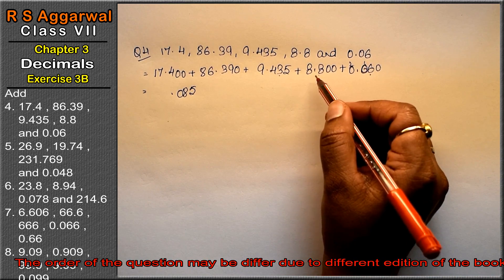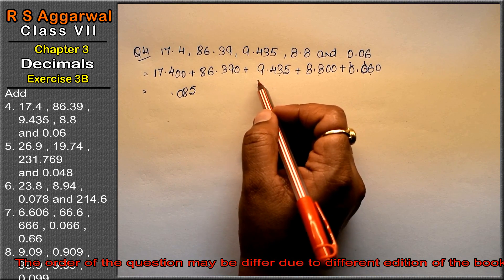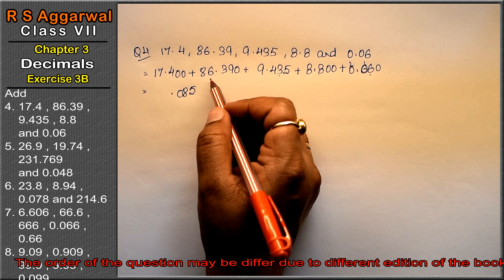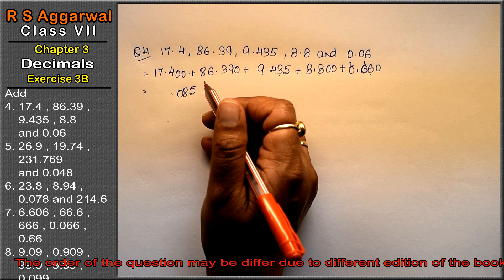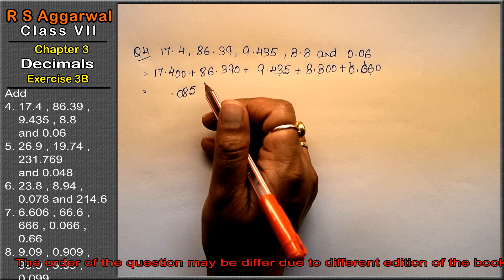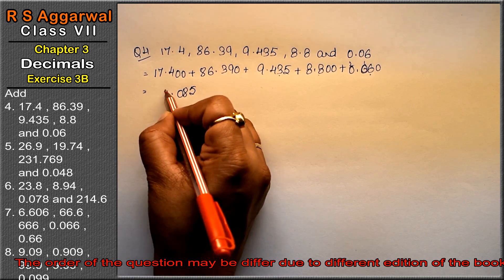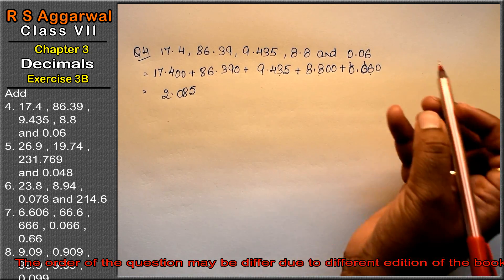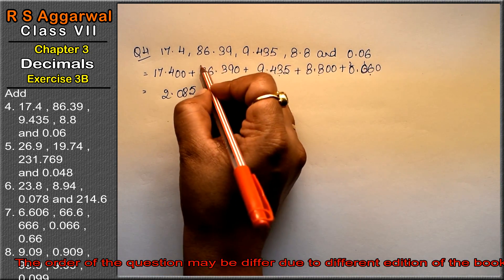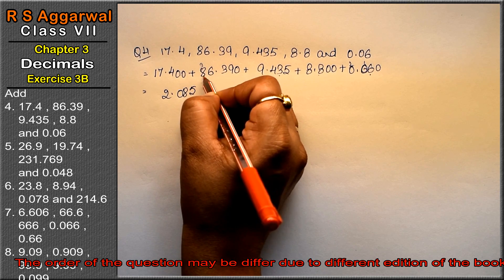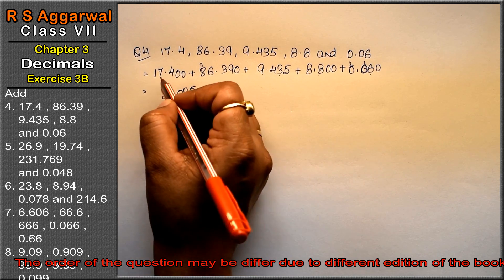2 and 8 is 10; 10 and 9 is 19; 19 and 6 is 25; 25 and 7: 26, 27, 28, 29, 30, 31, 32 — write 2, carry 3. 3 carry. 8 and 3 is 11 and 12.